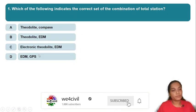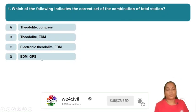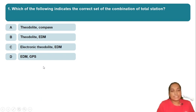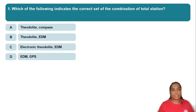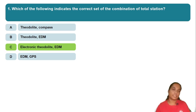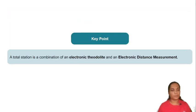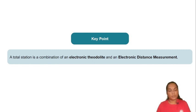This is a survey of 10 questions. Which of the following indicates the correct combination of total station? The options are: theodolite plus compass, theodolite plus EDM, electronic theodolite and EDM, or EDM plus GPS. Option C is correct: electronic theodolite plus EDM. EDM stands for electronic distance measurement.